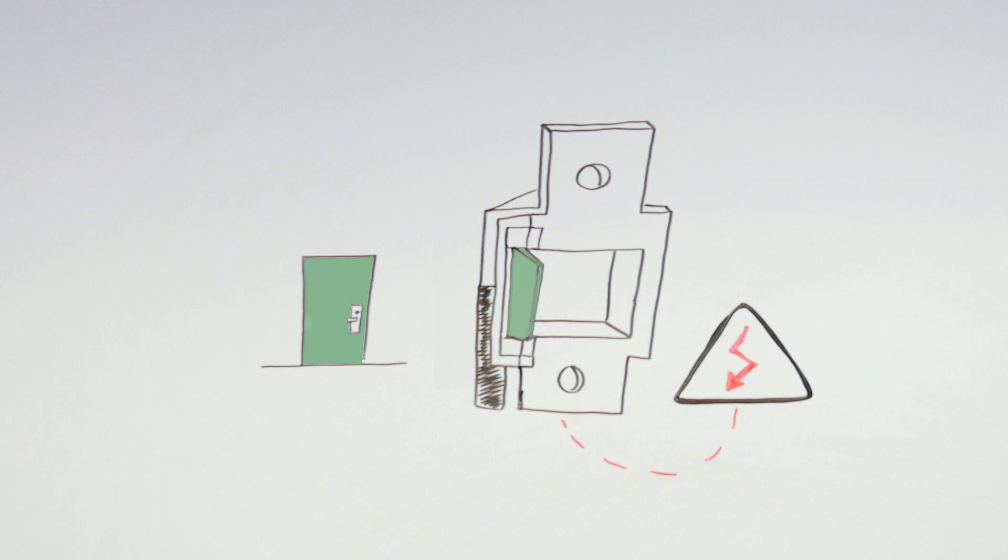A fail safe electric strike is less common because it offers no security in the event of power failure and it cannot be used on a fire rated opening. A fail safe electric strike means the lip of the strike would be unlocked if power were removed, so the lock or exit device would no longer be positively latched. Changes in air pressure alone could blow the door open, allowing smoke or fire to spread.